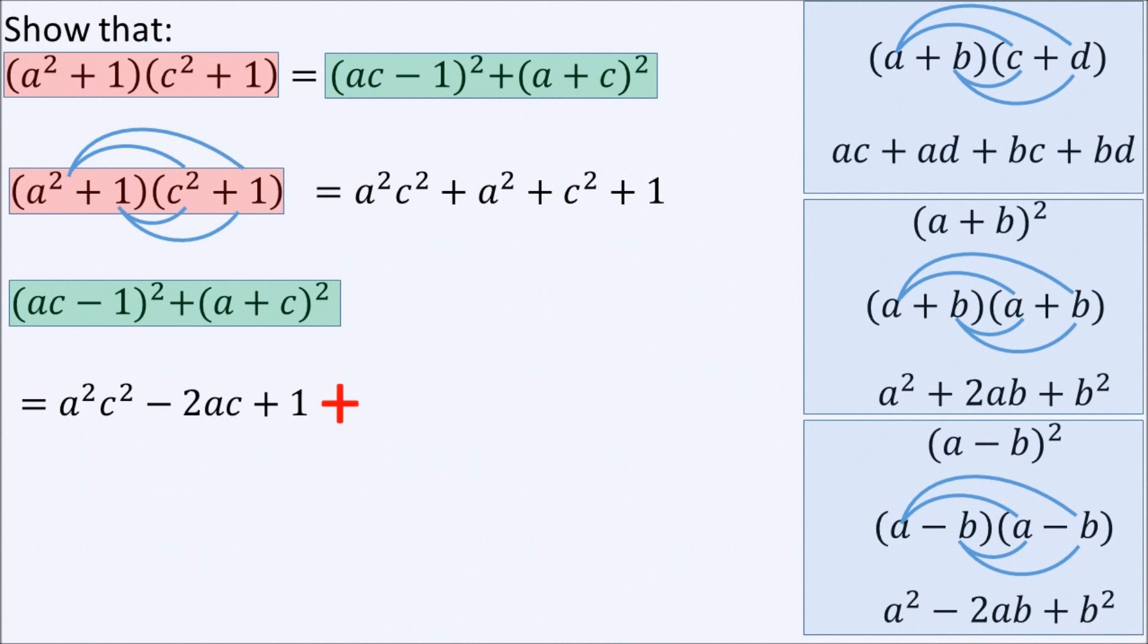This expansion is added to the square of this bracket, in which we will use this rule, where we square the first element and add double the product of both elements inside the bracket and finally add the square of the last element. So it becomes A squared plus 2AC plus C squared.